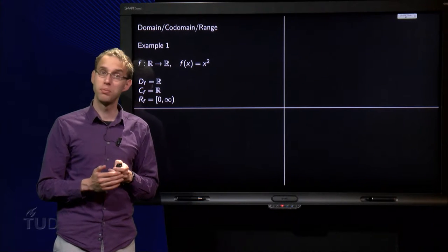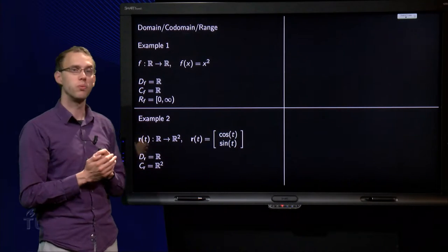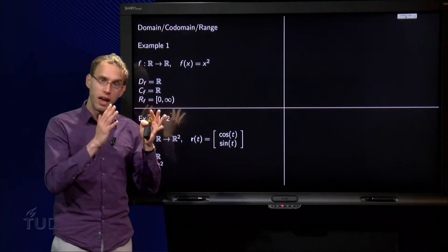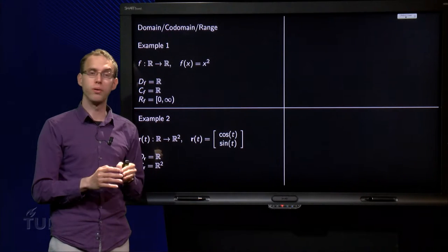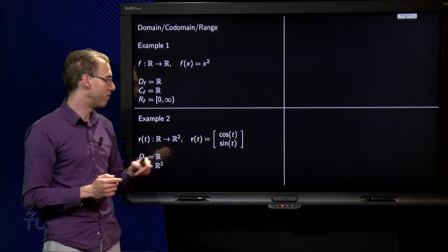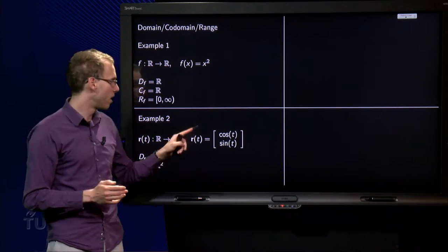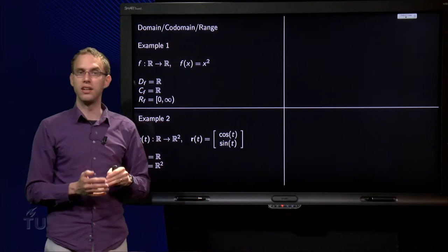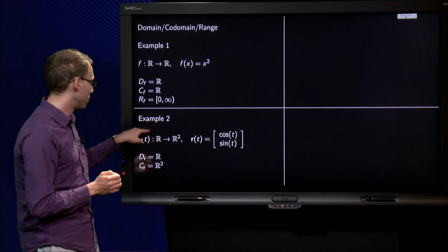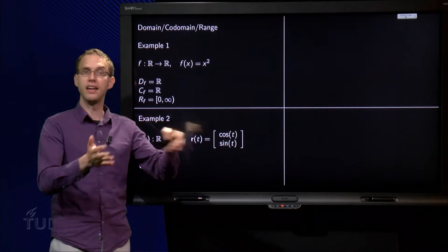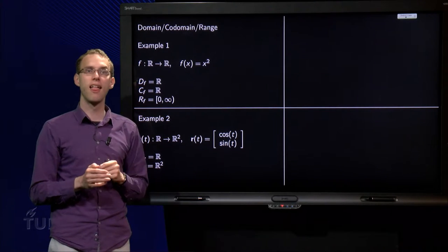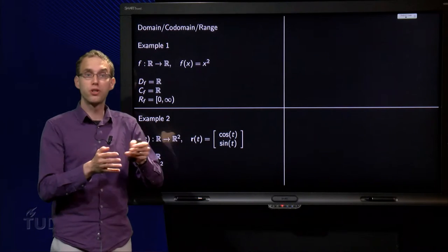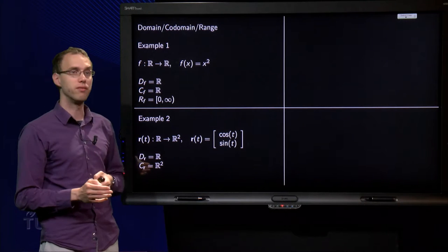But now we go to an example which is a bit harder. Example 2. We take the function r(t), which goes from R to R². So input values are all numbers in R, but as an output value we will have a vector. We take this prescription: r(t) equals (cos(t), sin(t)). So cosine and sine don't cause any trouble, so we can choose this domain R. We can put any real number into the cosine and sine. Writing down the codomain is also easy, because what comes out will be some vector in R². So the codomain of f is R².